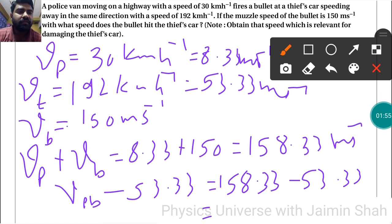So 158.33 minus 53.33 gives us the answer: 105 meters per second. So with this bullet speed it hits the thief's car.